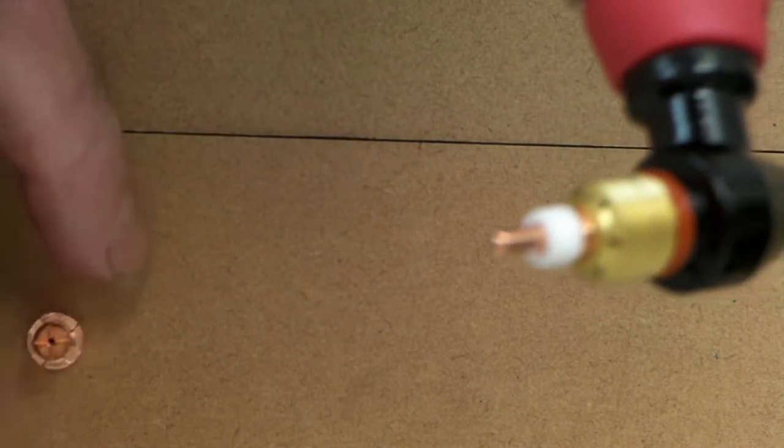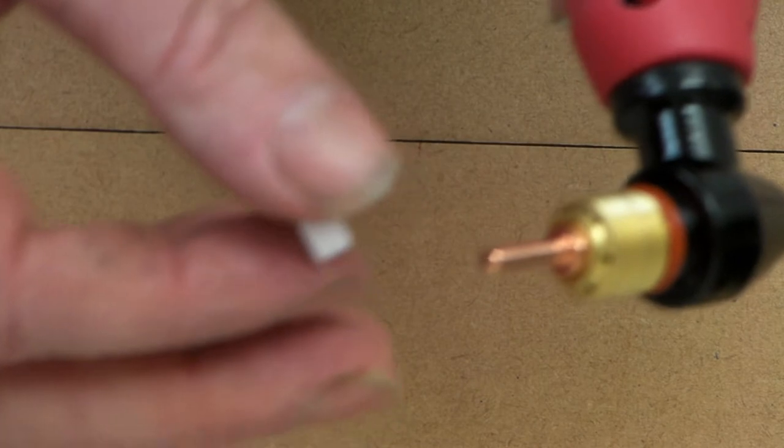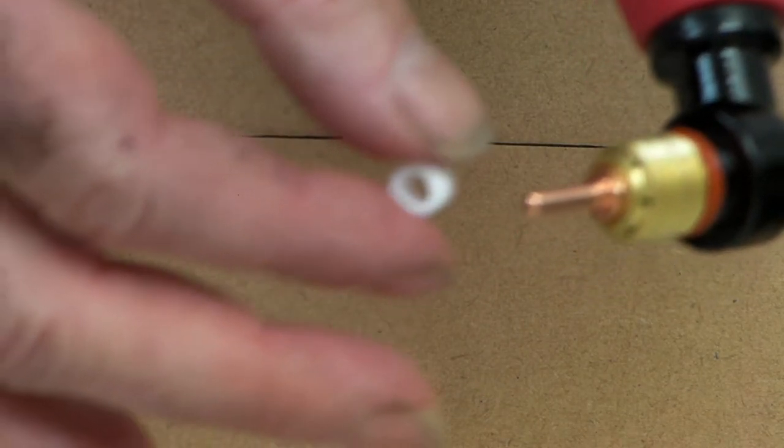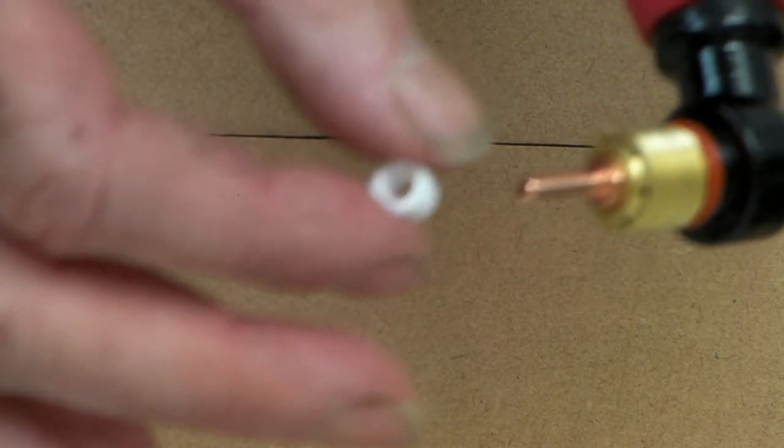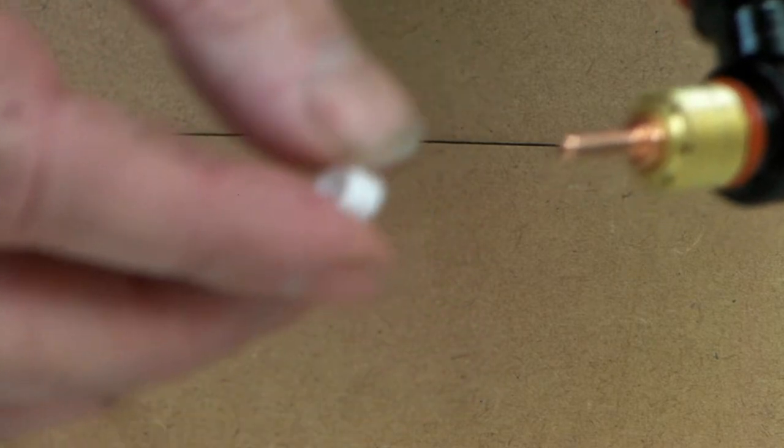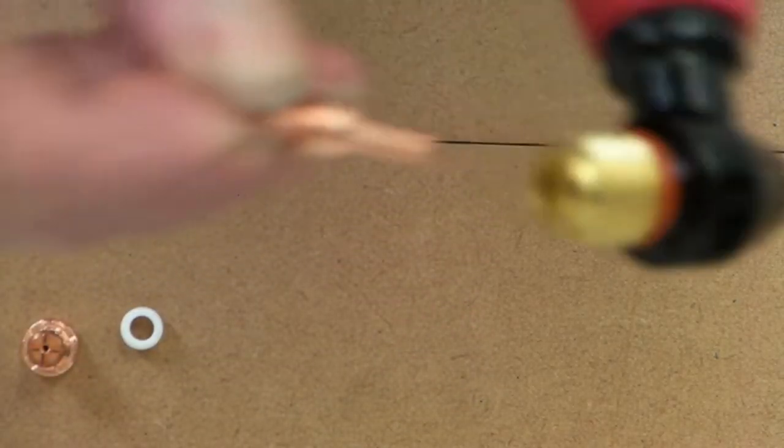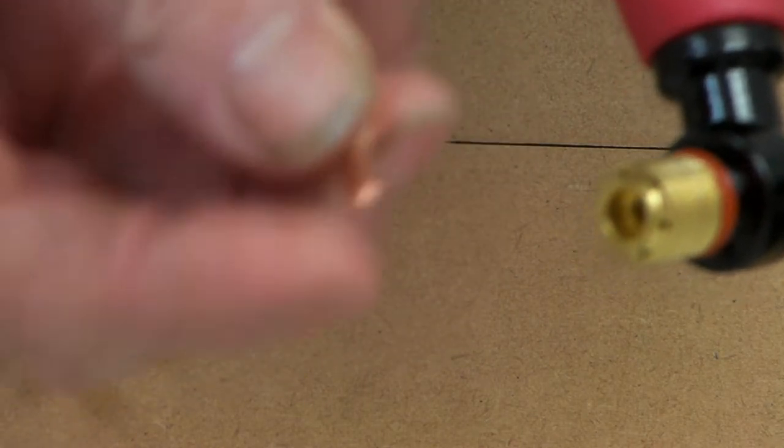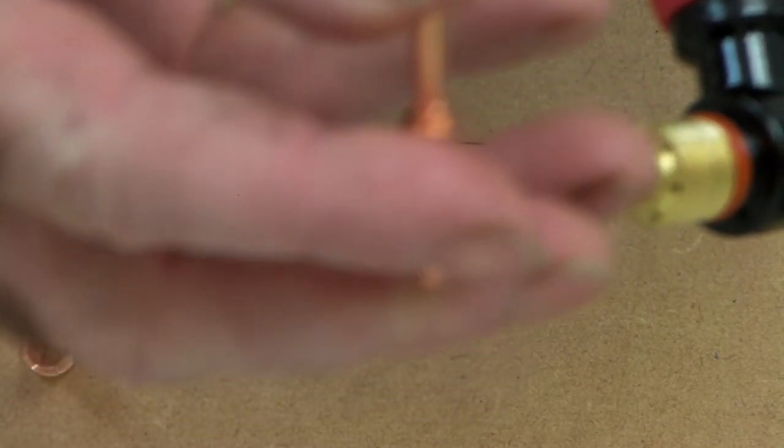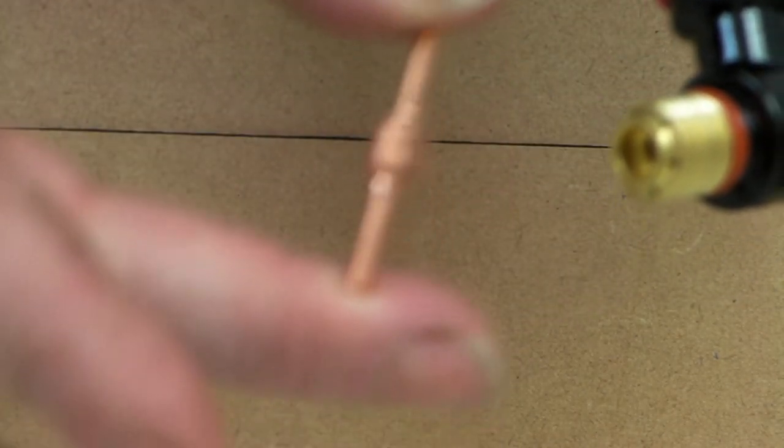Then we go to the consumables themselves. This is a standard tip, and a swirl ring for your air to go through when you pump air from a compressor. It gives it a bit of a vortex.